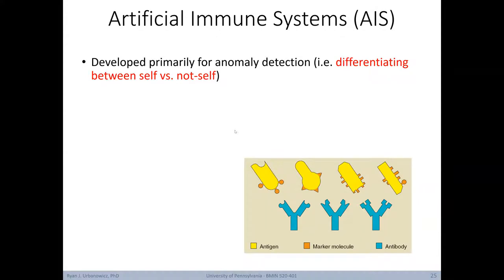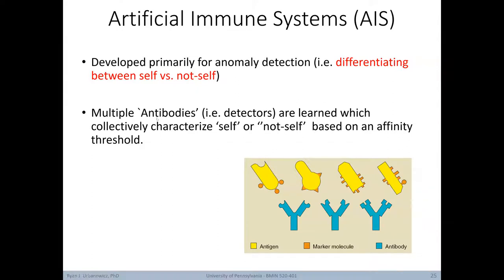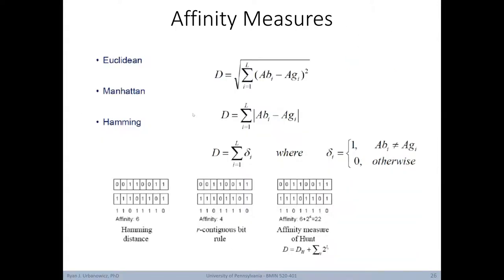Artificial immune systems were developed primarily for anomaly detection — algorithms designed to differentiate self and not-self. You can think of this as an extreme form of classification. Here, multiple antibodies, or detectors, are learned which collectively characterize self or non-self based on some affinity threshold. Unlike most rule examples where a rule must match an instance exactly, in artificial immune systems we rely on some affinity measure, allowing non-exact matching. We can use a variety of distance measures such as Euclidean, Manhattan, and Hamming distance to calculate the distance between a rule and an instance. When applying Hamming distance, we count the number of positions with different values and sum them up.